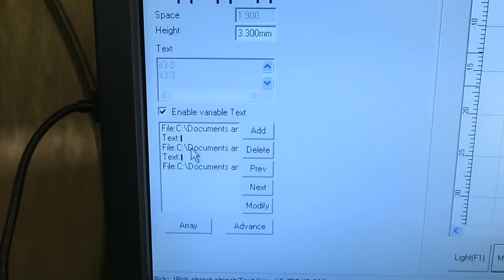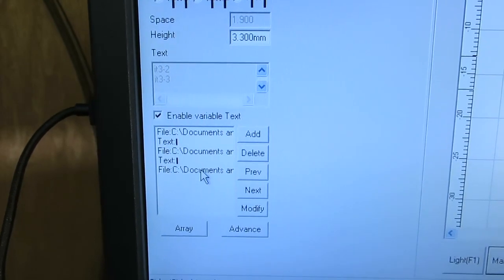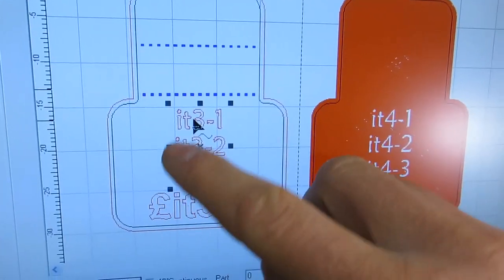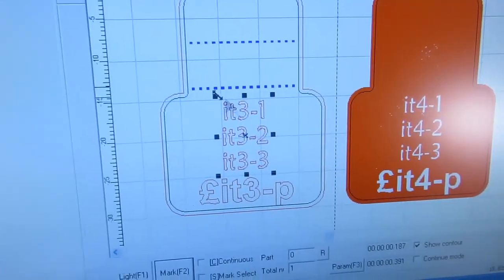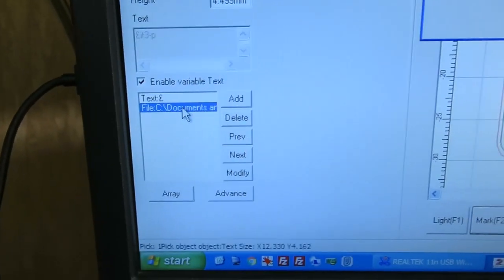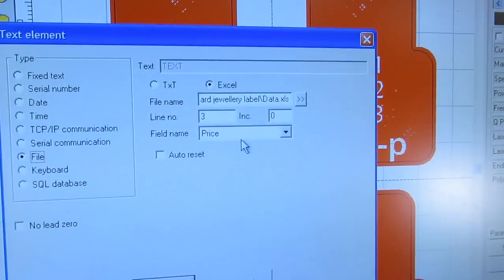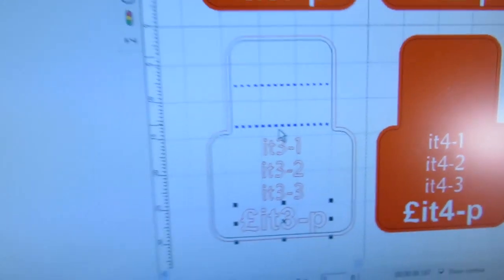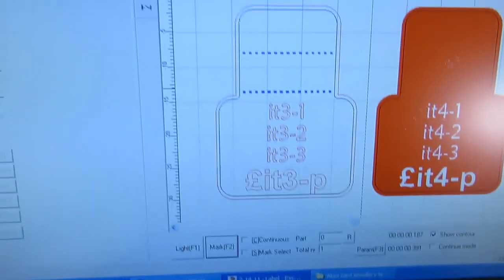Then there's a new line character. Then it's reading in line two, new line and then line three. So that gives us the three lines of text there. For the price it's simply reading in the price field name. So all that's okay.